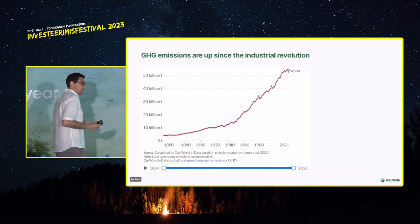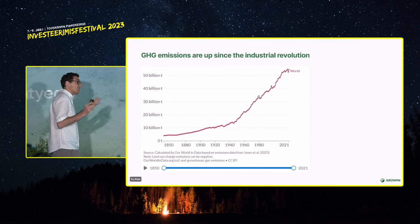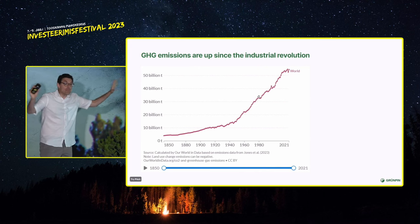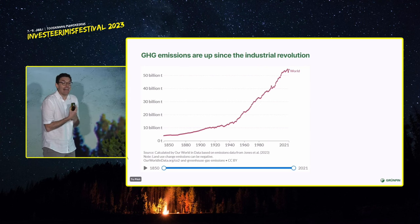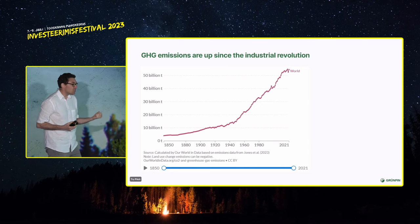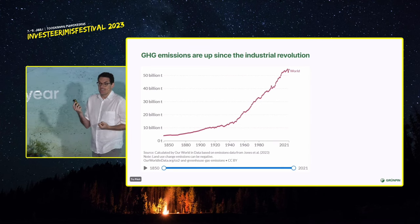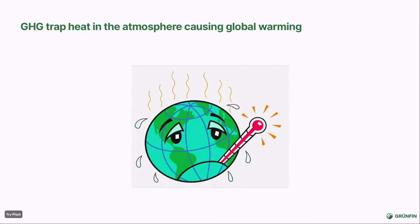We've been burning fossil fuels quite intensively since the Industrial Revolution in the 1800s. Before the Industrial Revolution, we did emit greenhouse gases, but we had enough nature to capture it, so our planet was in balance. Trees, the soil on the ground, our oceans — they capture carbon. But now we've been burning so much that nature just can't keep up. We don't have enough trees or oceans to capture them. When we emit these gases, they go up into the atmosphere and trap heat, and that's what causes global warming.